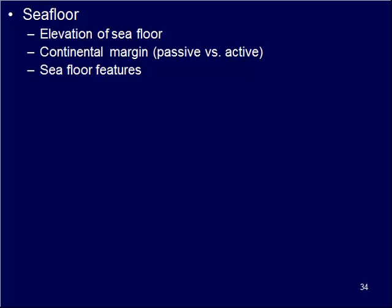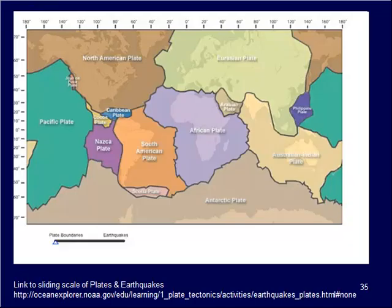The Earth's surface is broken up into different plates. We can see on this map we've got North America right in the center on the North American plate. You can see all the major ones — the African plate, the Eurasian plate, the Pacific plate. What's happening is these plates are moving around: they're bumping together, they're pulling apart, they're sliding past one another. Where we have the edge of a continent corresponding to a plate boundary, we call that an active margin.